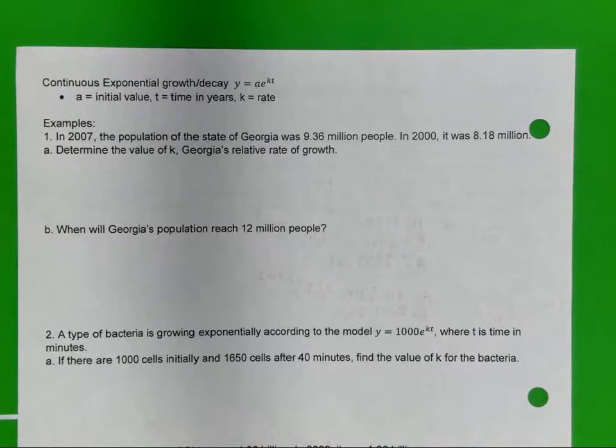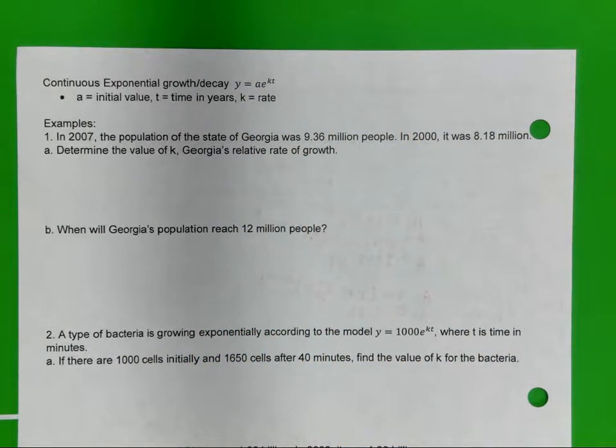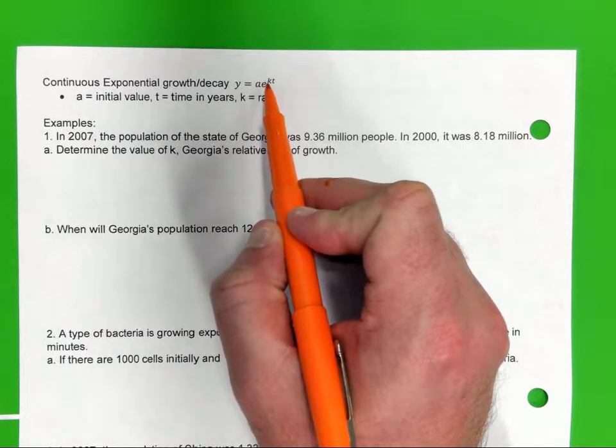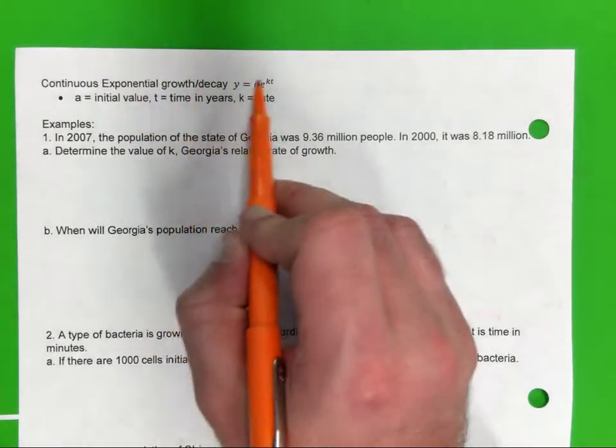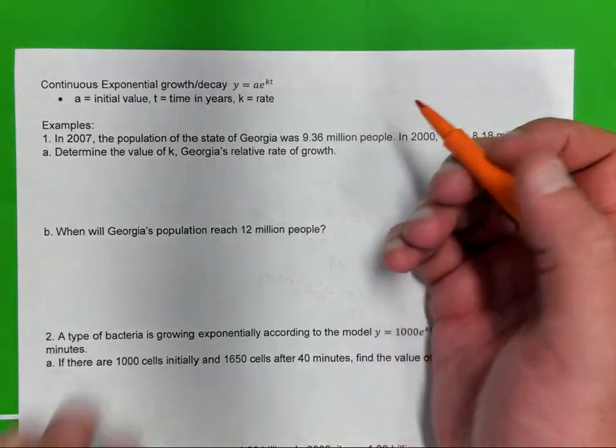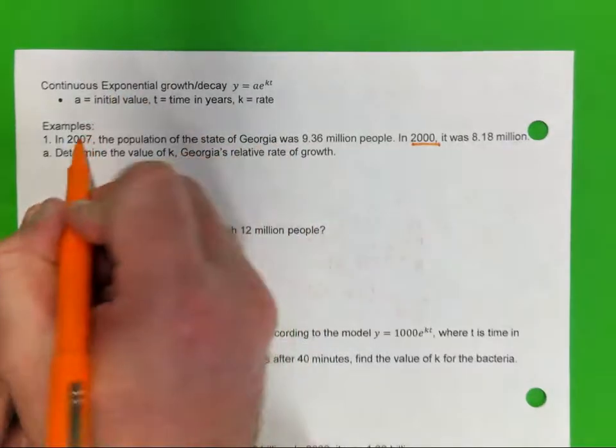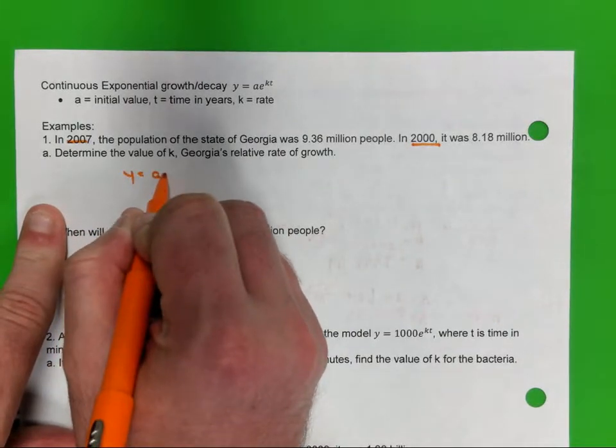Which one do I want to do? We're going to do the first one, Colin. You don't have one of these like this on test. The only ones you have on your test is compound interest. But let's just look at this, okay? It says, in 2007, the population of the state of Georgia was 9.36 million people. In 2000, it was 8.18 million. This is a prime example of how exponential functions are used in real life. It says, determine the value of K, Georgia's relative rate of growth. Here's the formula. Y equals A times E to the KT. A is the initial value. T is the number of years. K is the rate at which it's growing. Okay, so... Okay, what would be considered the initial value? The year 2000, year 2007, or 2000? What comes first? 2000. All right, so Y equals AE to the KT.